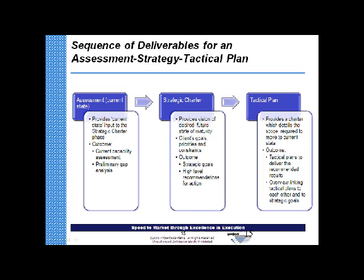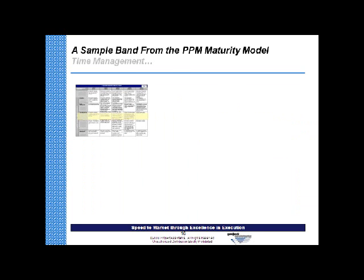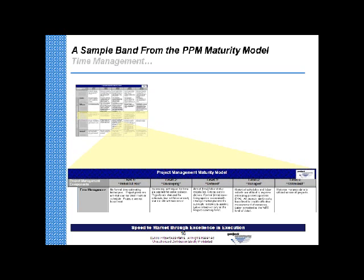The result of the tactical plan is really to scope and effort. If an organization is going to embark on a change plan in the portfolio, project, and lifecycle management areas, we need some sense of what's in scope and out of scope. For example, if we talk about the maturation of time management, Nirvana might look like level five optimized — where historical variance data is utilized across all projects so we can know where we've been good, where we've been bad, and how we can get better. A tactical plan might say that today we are at level one — no formal time estimating techniques, project plans are not statused for labor costs or schedule, and projects are not baselined.